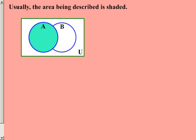As you can see, the entire area inside of the circle containing the label A is shaded. This would be a graphical example of set A.